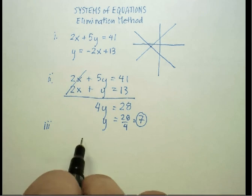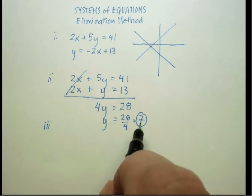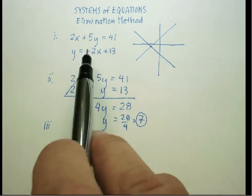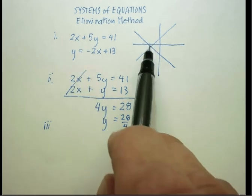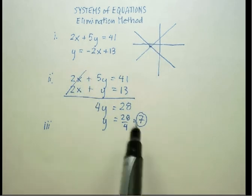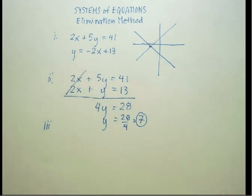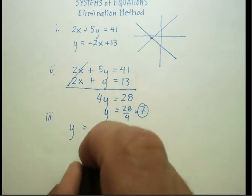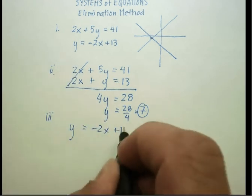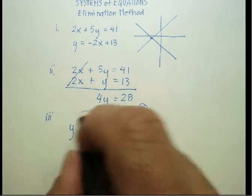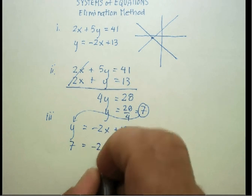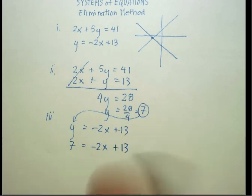In this third step, what I'm going to do is substitute. 7 can go into either one of these two equations because it's a point that's common for both equations. I'm going to substitute 7 into either one of these two equations wherever I see y and then solve for the x. Let's put it here since it seems to be the easiest. y is equal to negative 2x plus 13. I'm going to get 7 is equal to negative 2x plus 13.